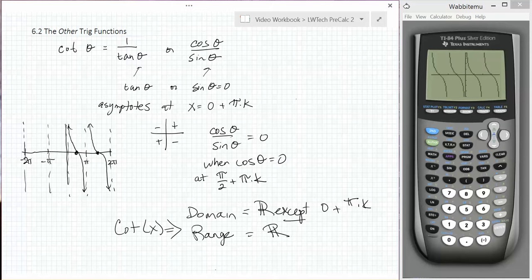Lastly, notice that the cotangent, like the tangent function, has a period just of pi. It repeats every pi.